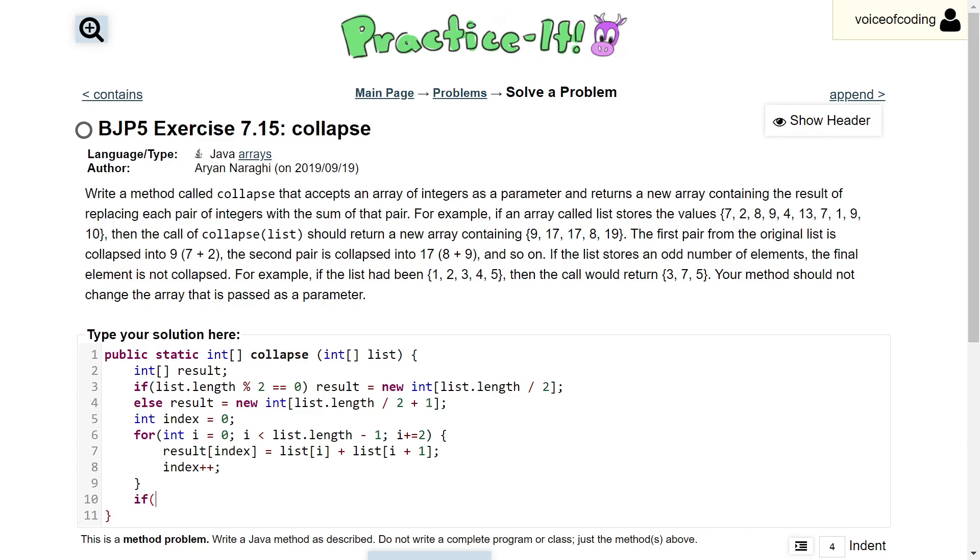Finally, in the case that our list length is odd, we need to add that final number. We're going to first check to see if it's odd, similar to how we check to see if it's even, except we check to see if the modulus by 2 is not equal to 0.